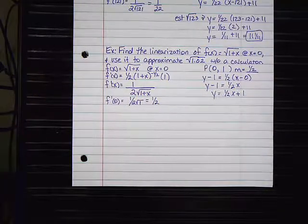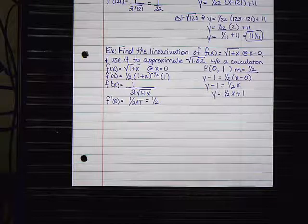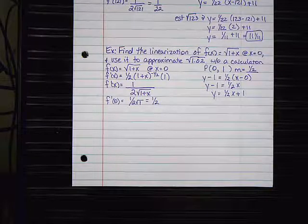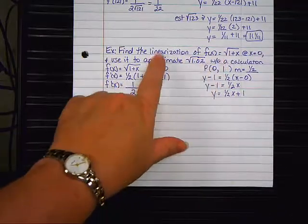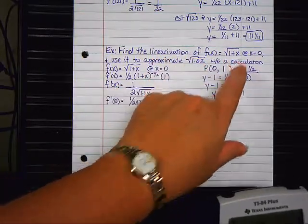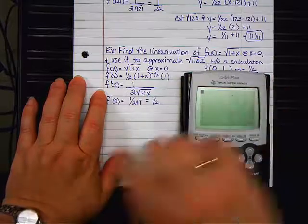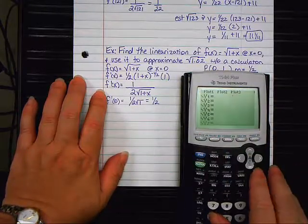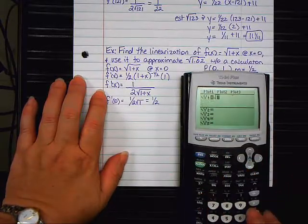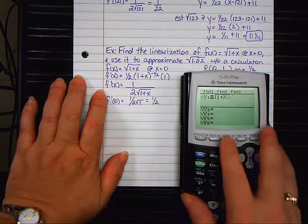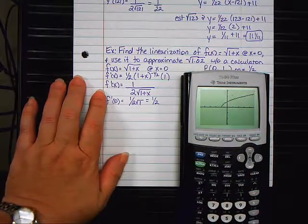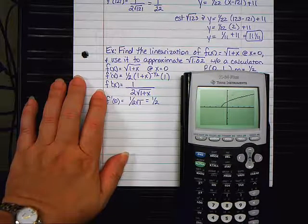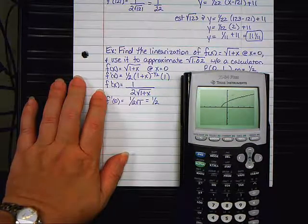I'm going to stop for just a minute before we finish the problem and give you a visual of what we're doing. What we're doing is when we find a linearization at a certain point, we're finding the tangent line. So I'm going to take this function, 1 plus x, and type it in the calculator on a zoom 4. There's the graph we're talking about.